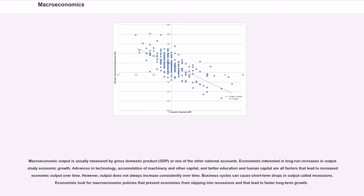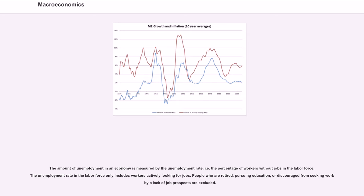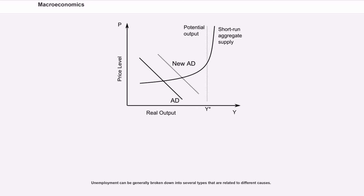Business cycles can cause short-term drops in output called recessions. Economists look for macroeconomic policies that prevent economies from slipping into recessions and that lead to faster long-term growth. The amount of unemployment in an economy is measured by the unemployment rate, the percentage of workers without jobs in the labor force. The unemployment rate in the labor force only includes workers actively looking for jobs. People who are retired, pursuing education, or discouraged from seeking work via lack of job prospects are excluded.